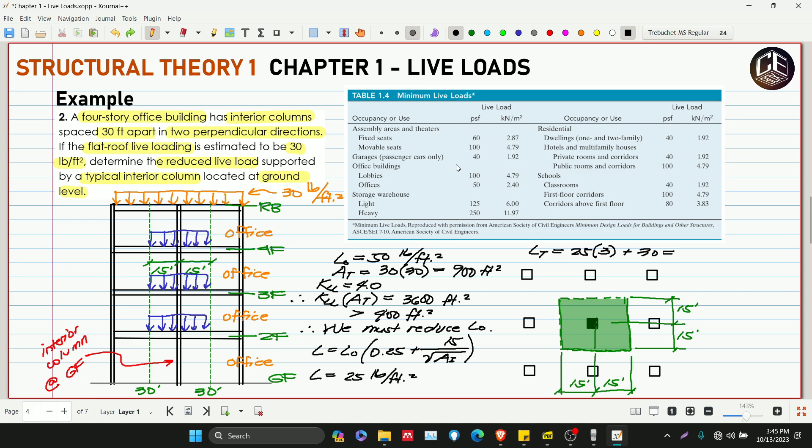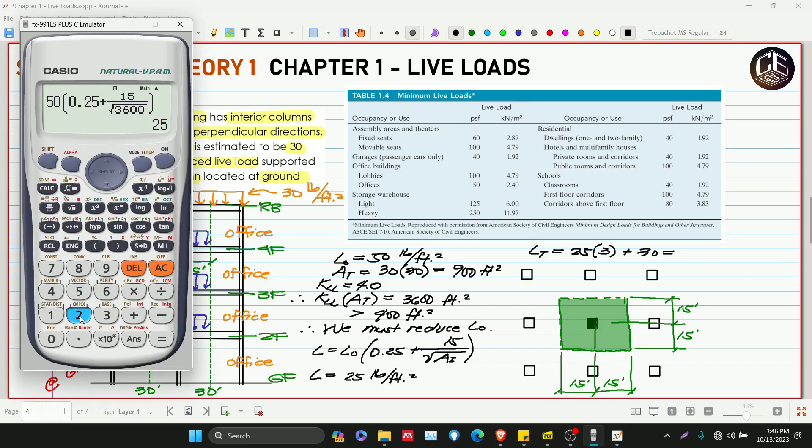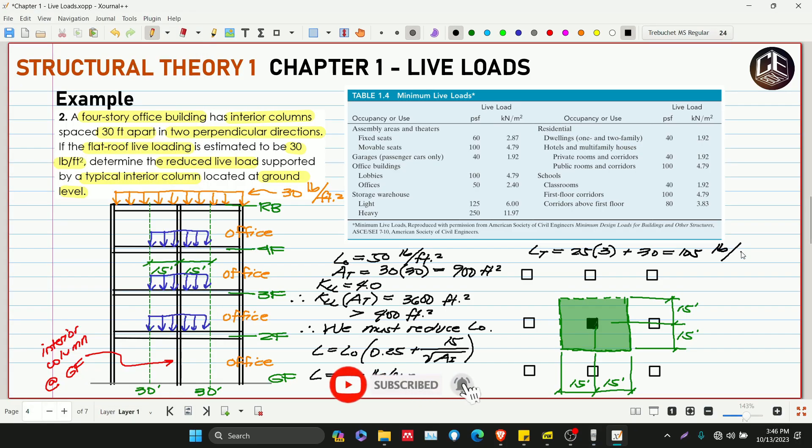The total is 25 multiplied by 3 plus 30, which gives 105 pounds per square foot. This is the total load carried by our interior column at ground level. If we want it not as a distributed load but the actual magnitude of our load at the ground floor, let's say letter P.